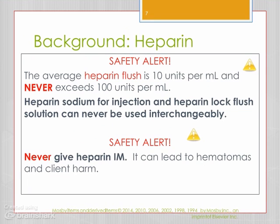From your readings, you may have heard that the average heparin flush is 10 units per mL and never exceeds 100 units per mL. Today, we do not use heparin flushes as often — we used to use them all the time to prevent clots in IV tubing, but we've learned that saline works adequately as a flush. Heparin flushes are still available for use with central lines and similar applications.